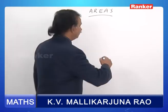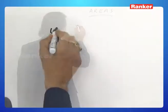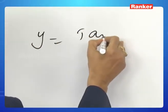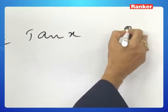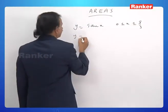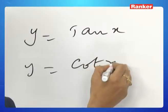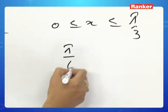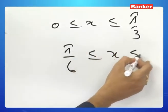Let us deal with the problem. The area between y equals tan x, 0 less than or equal to x less than or equal to pi by 3, and y equals cot x, pi by 6 less than or equal to x less than pi by 2.